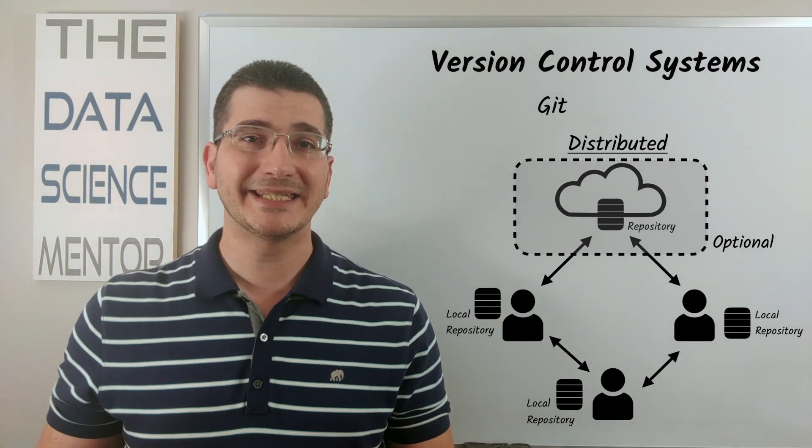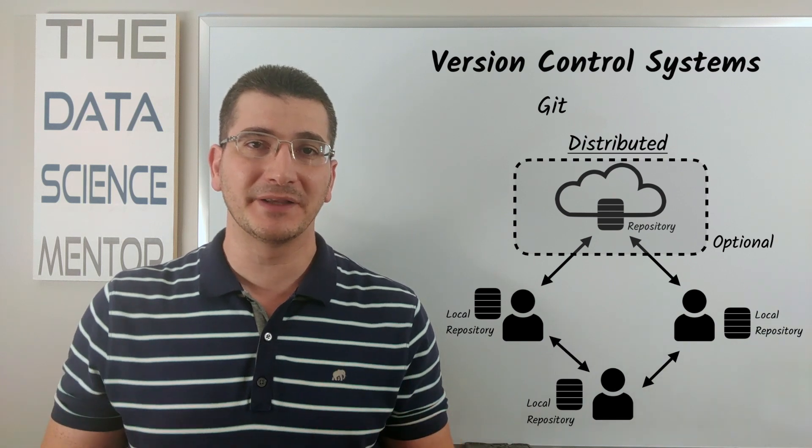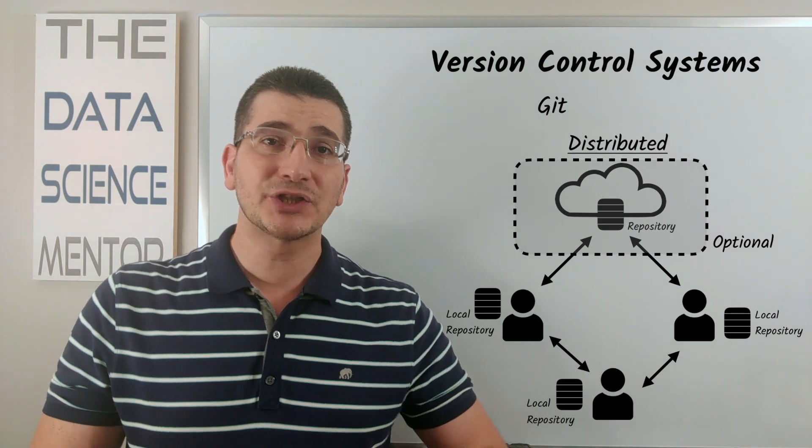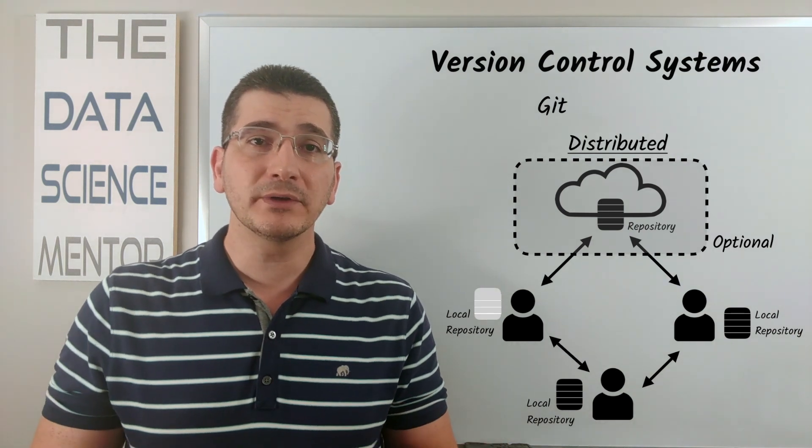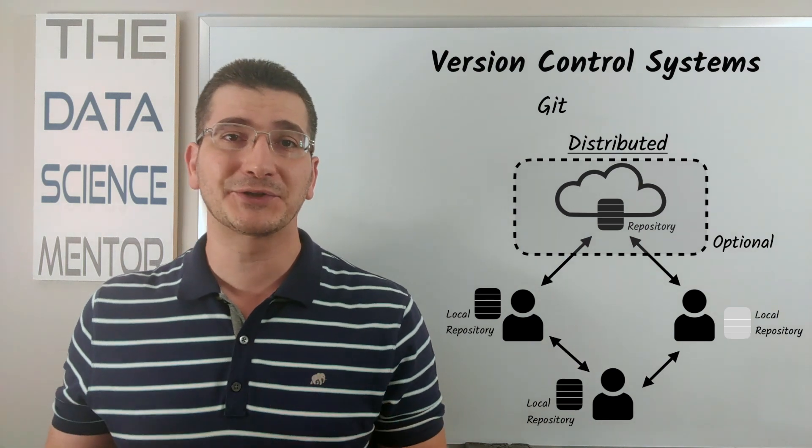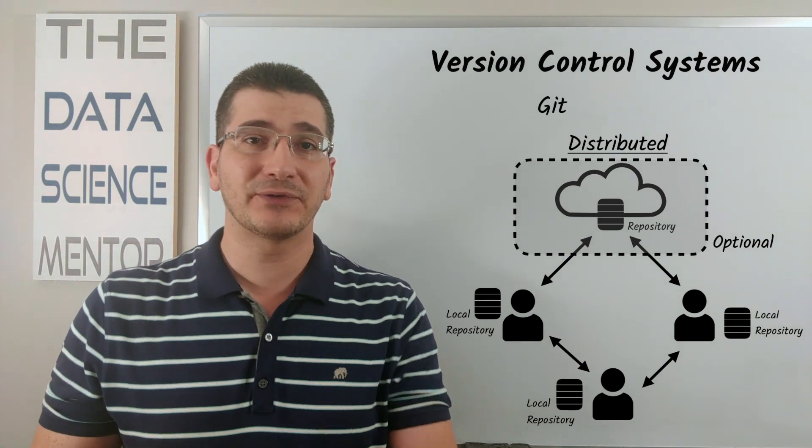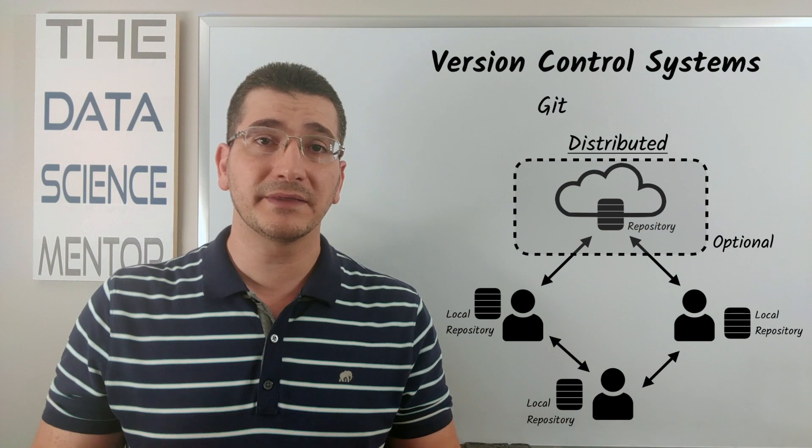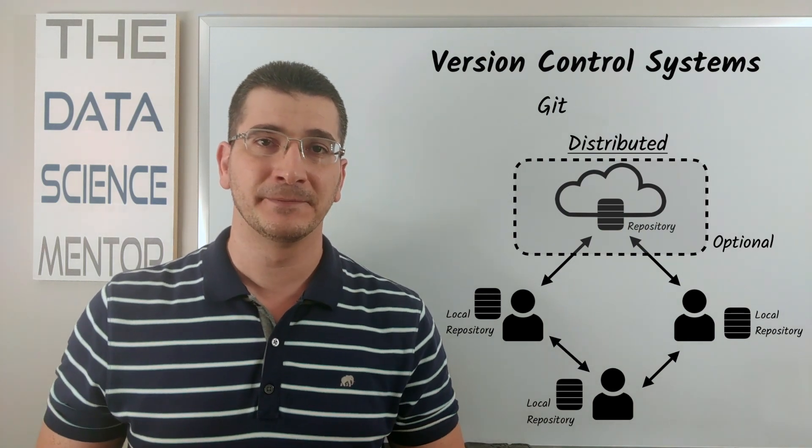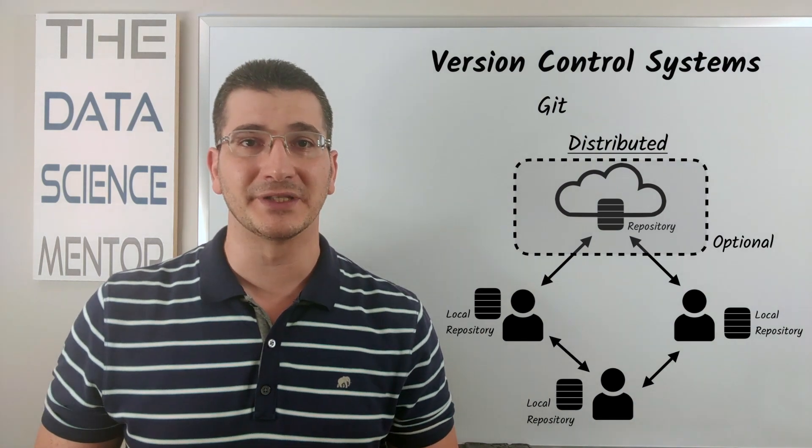But it's when working in teams that Git being a distributed system really shines, because what it means to be distributed is that each team member would have their own local copy of the repository along with the entire history of the project. And so different team members can work on the same files simultaneously without disrupting each other, and once they're done, they can easily merge their changes.